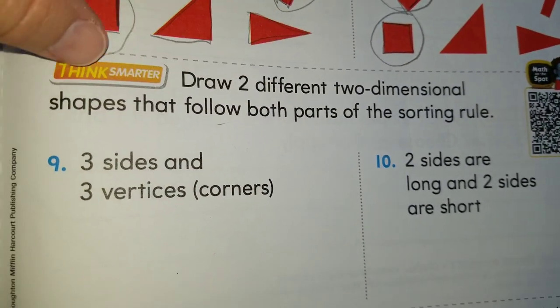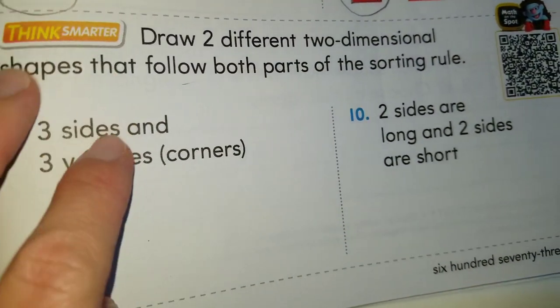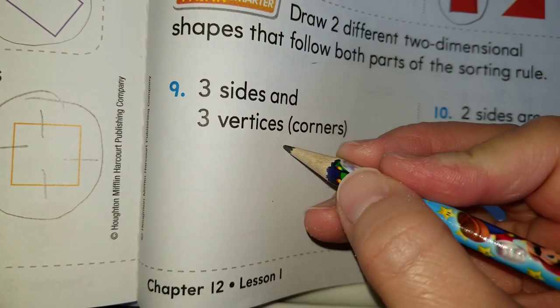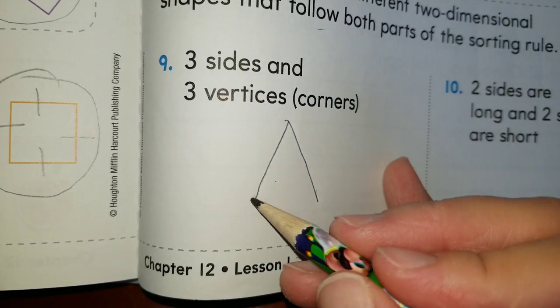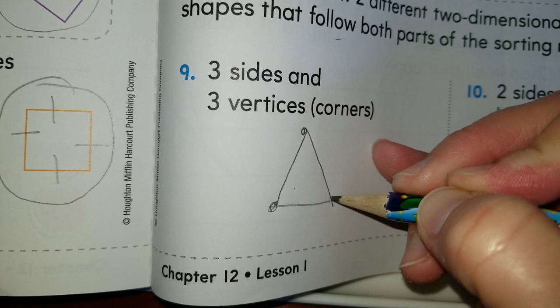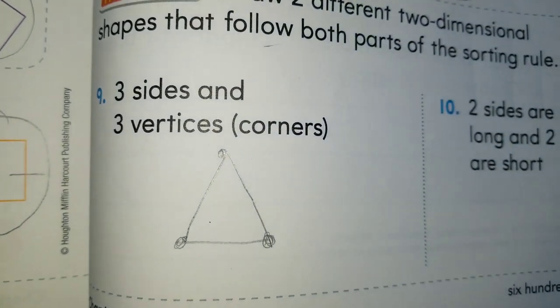Number nine: draw two different two-dimensional shapes that follow both parts of the sorting rule — three sides and three vertices. What is the only shape that has three sides and three vertices? We draw one side, two sides, and if we put them together we get a triangle! It has three vertices: one, two, three. The only shape that has three sides and three vertices is a triangle.